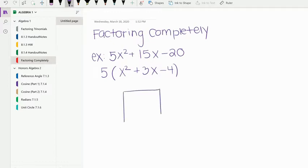So from there, you're going to take that trinomial and place it in the box. So the first term, x squared, goes in the first box. The last term, negative 4, goes in the last box. And then you can make your diamond.